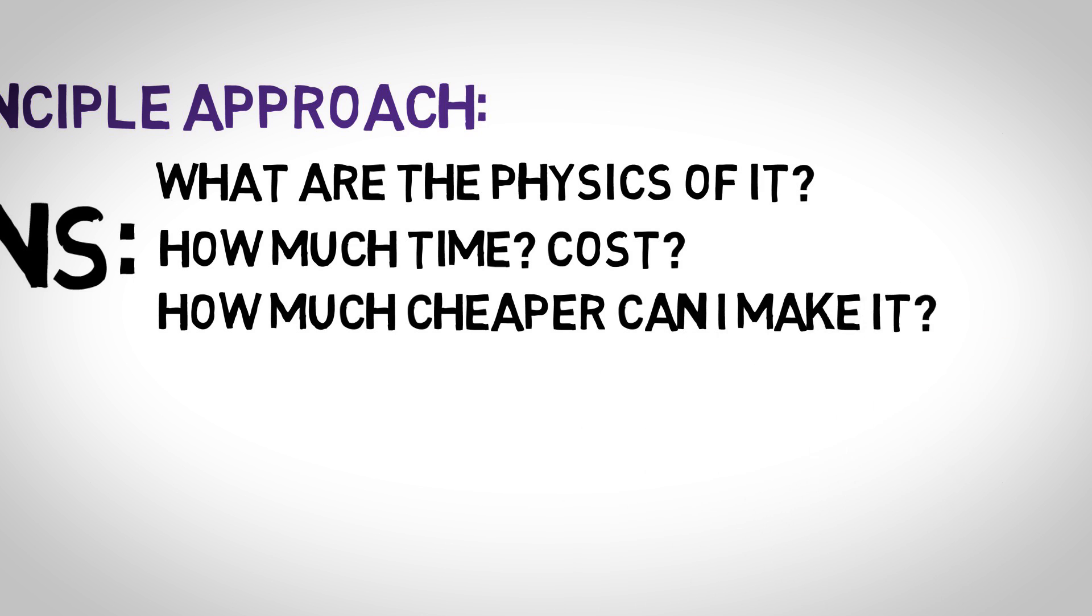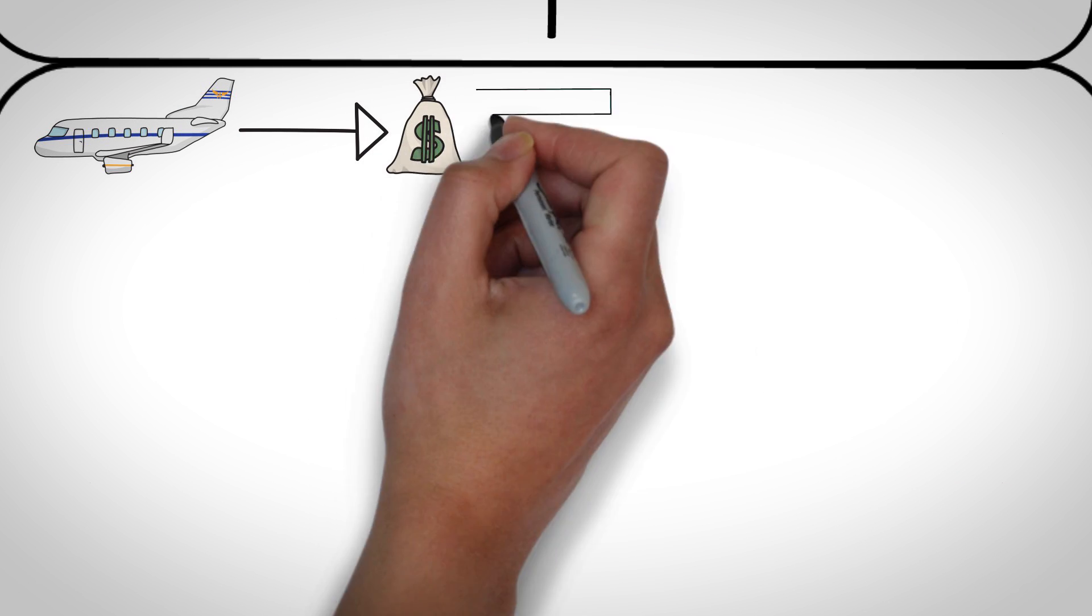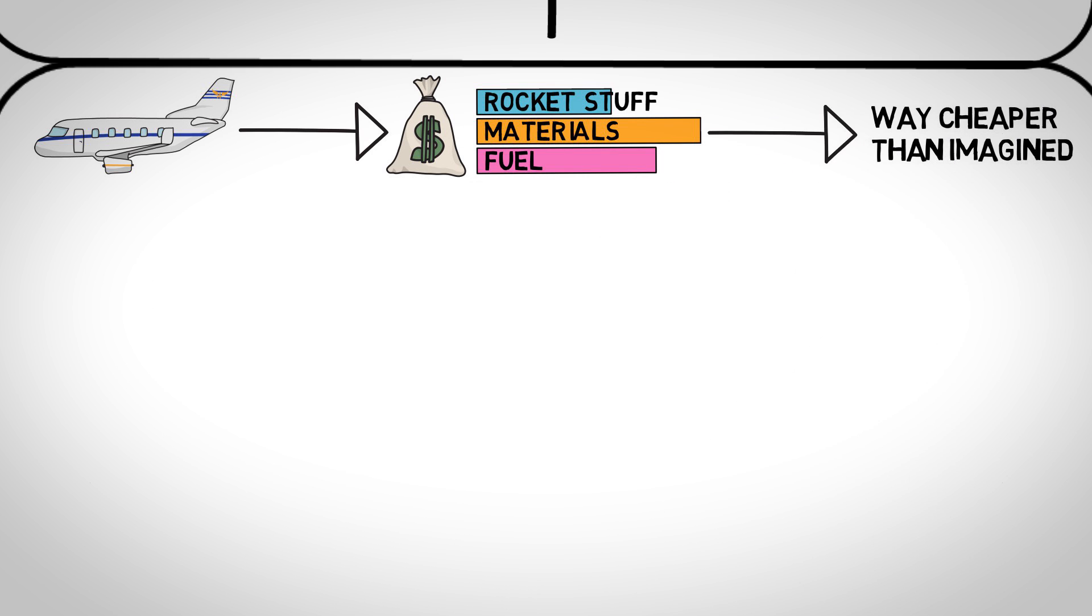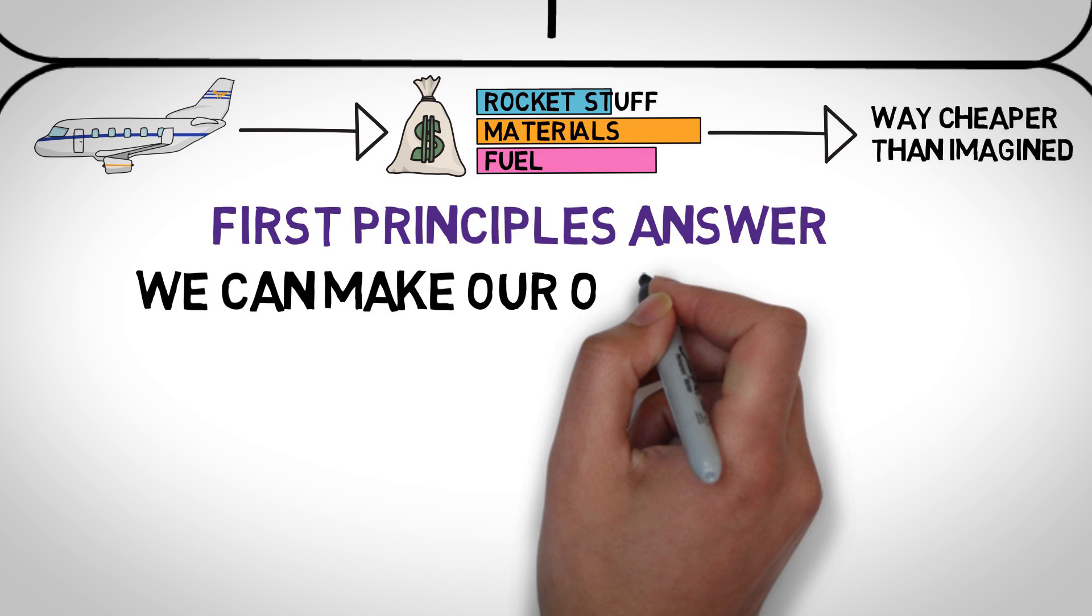After asking these questions and doing some research, Elon found out that he can make a rocket for much cheaper than anybody could imagine. On the flight back from Russia, he showed his two friends this spreadsheet that he created using the knowledge he gained from studying rockets. And found that it was possible for them to create it themselves.